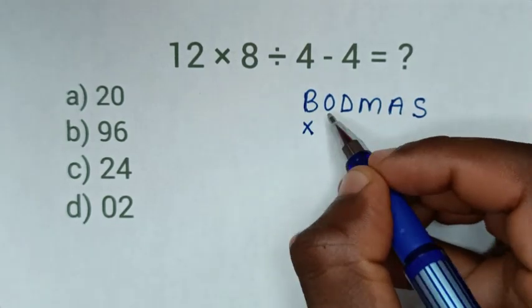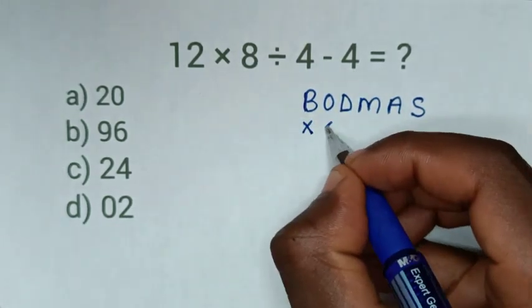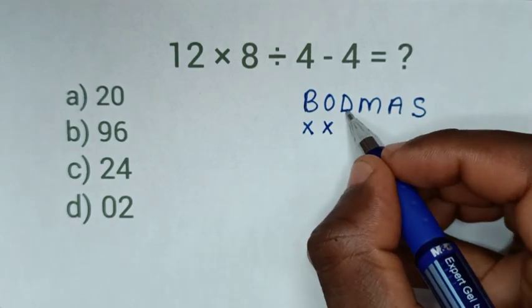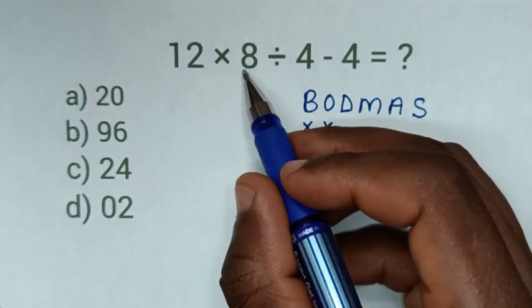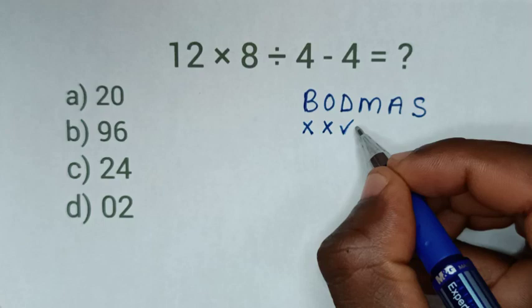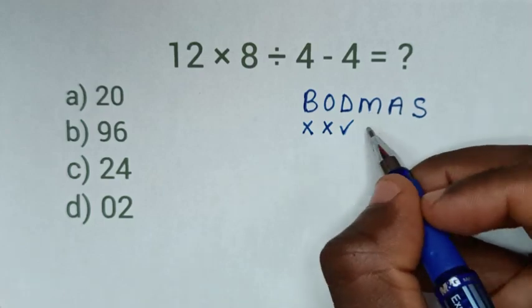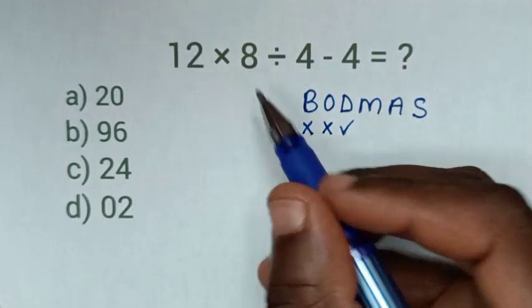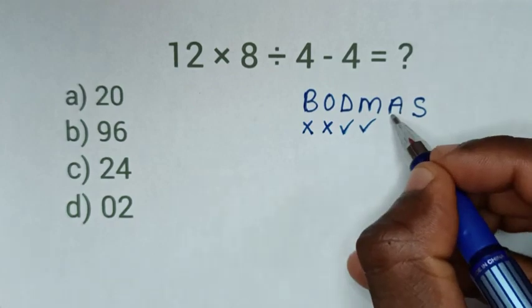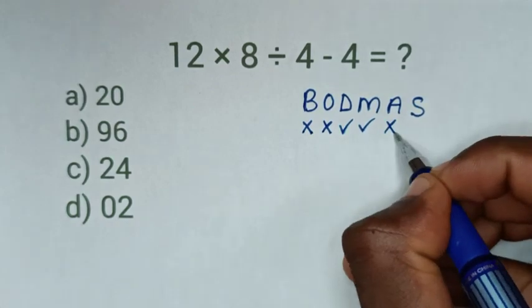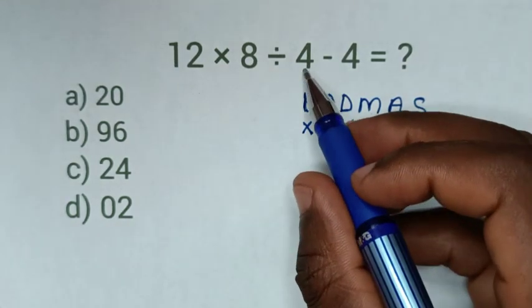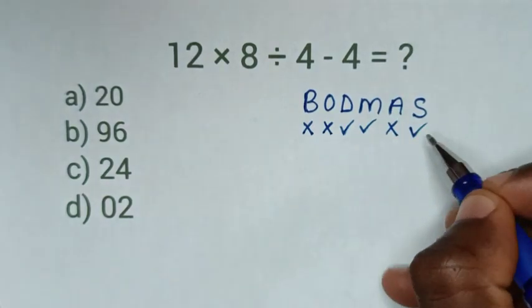D is division. We have division, 8 divided by 4. M is multiplication. We have multiplication, 12 times 8. A is addition. We don't have addition. S is subtraction. We have subtraction, 4 minus 4.